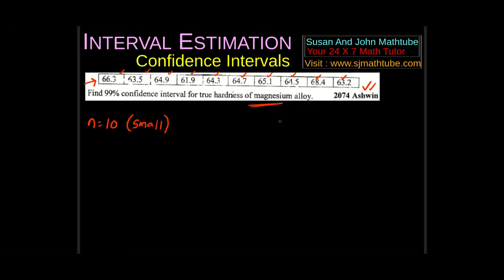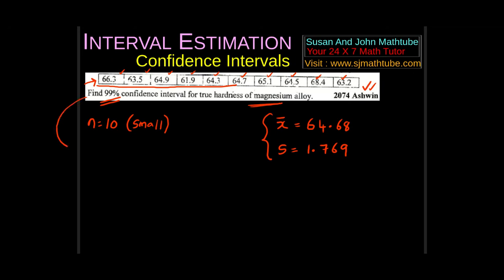The second difference is they have not given us x̄ or the sample standard deviation. So take a calculator, input all the quantities in one-variable mode. I got x̄ = 64.68 and s = 1.769. The confidence level is 99%, so the significance level is 1%, and alpha/2 = 0.5% = 0.005.